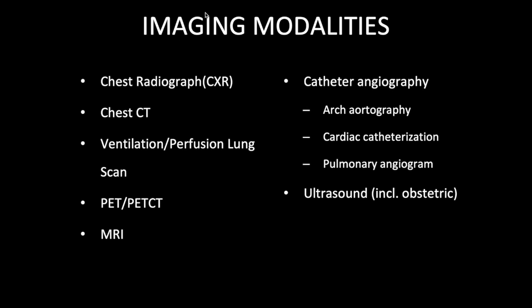Let's start out by mentioning that there are several imaging modalities, which include chest radiographs, CT scans, nuclear medicine scans, etc. The term modality refers to the type of test. Different types of tests may use different types of energy. For example, CTs and chest radiographs utilize x-rays, while nuclear medicine may use gamma rays or positrons. MRI uses strong magnetic fields and ultrasound uses ultrasound rays.